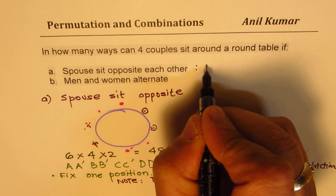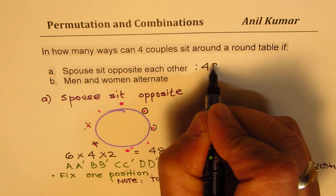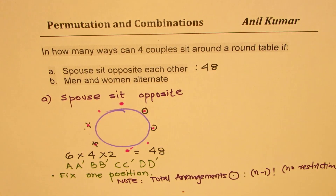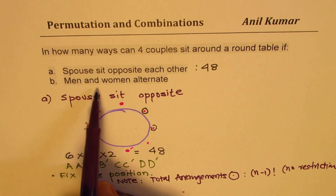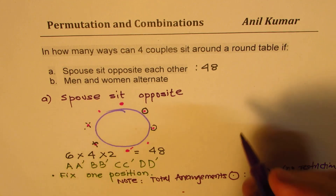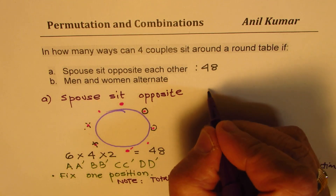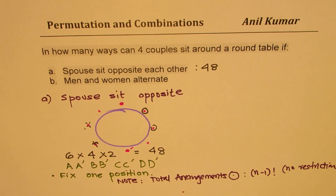So the answer for Case A is 48. Now let's look into the second scenario: where men and women alternate. Let's look into Part B.